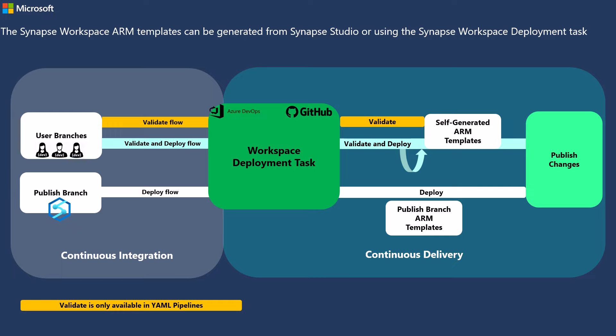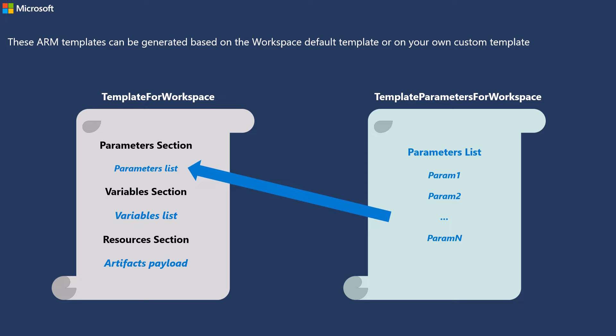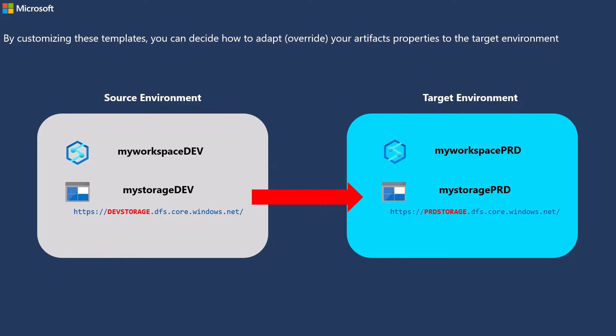One of the advantages of having your Synapse workspace integrated with Git is to generate ARM templates containing all your workspace artifact properties. These templates will be required in scenarios where you need to deploy these artifacts to a different environment, or in disaster recovery scenarios where you need to recover all your workspace artifacts.